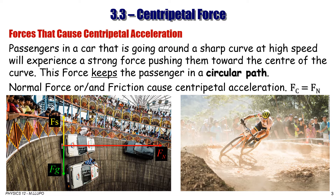Passengers in a car going around a sharp curve at high speed will experience a strong force pushing them toward the center of the curve. This force keeps the passenger in a circular path with the car. The normal force, and sometimes the force of friction, can cause centripetal acceleration, which we call centripetal force.